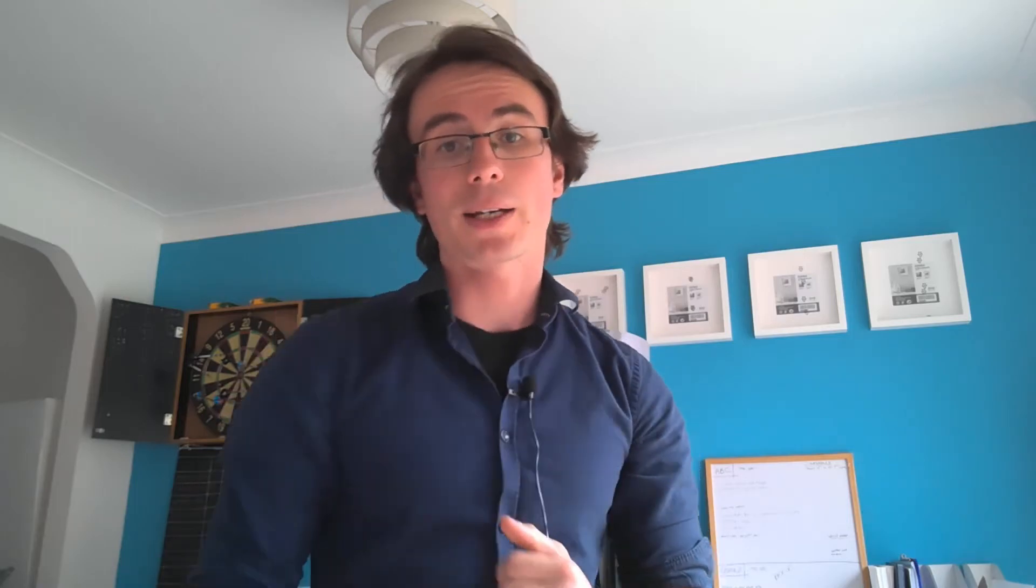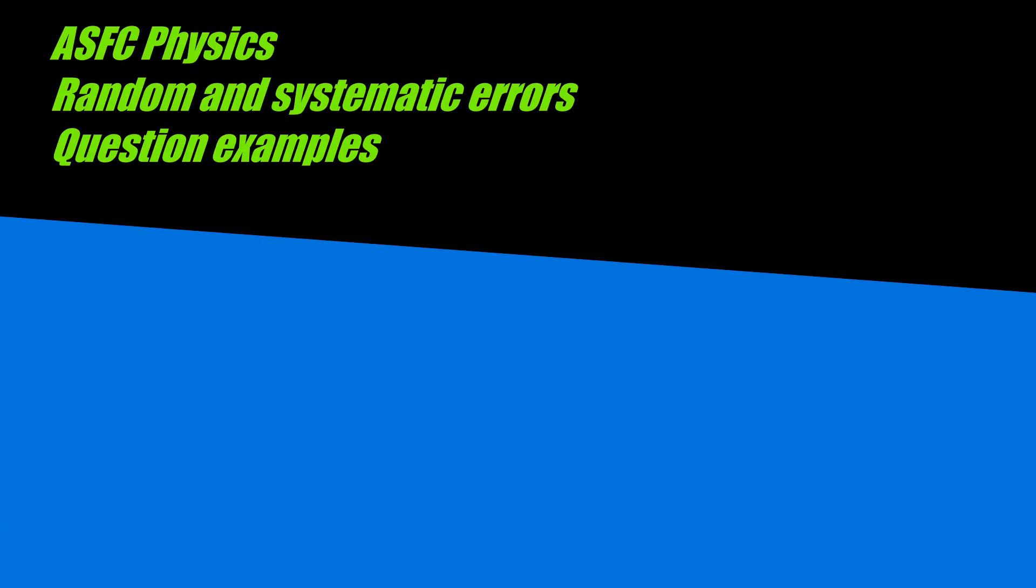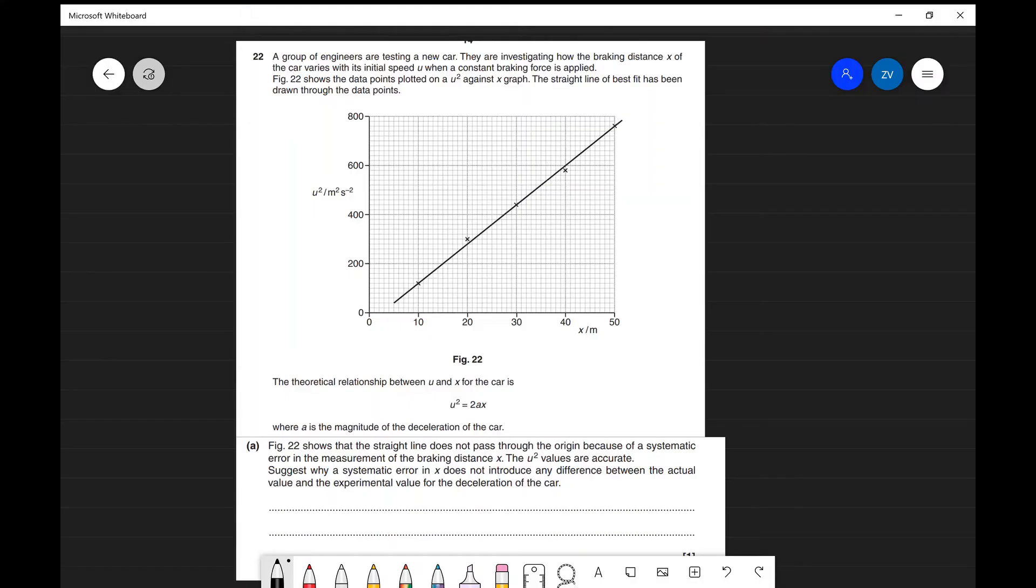Let's have a look at some question examples of random errors and systematic errors. So now let's have a look at our first example. This is question 22 from OCR's 2016 AS paper, breadth in physics.